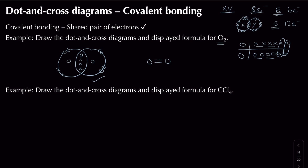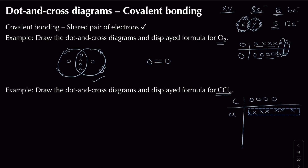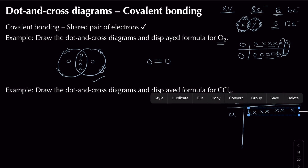For tetrachloromethane (CCl₄), I follow the same method. Carbon is in group 4 so it has 4 electrons in its outer shell. Chlorine is in group 7 so it has 7 electrons in its outer shell.